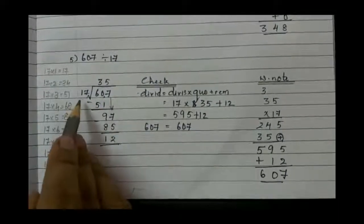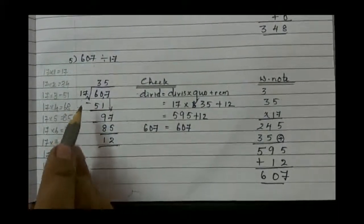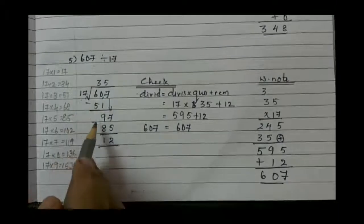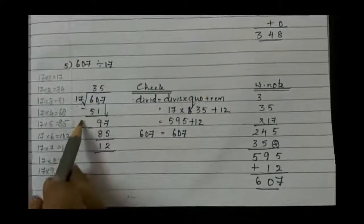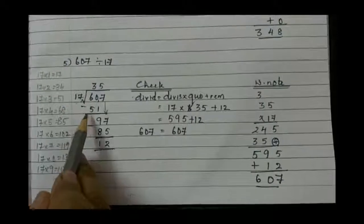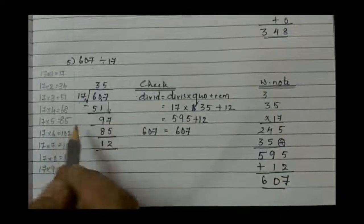17 how many is 60? We should take less than 60. 17 times 3 is 51. So subtract it.